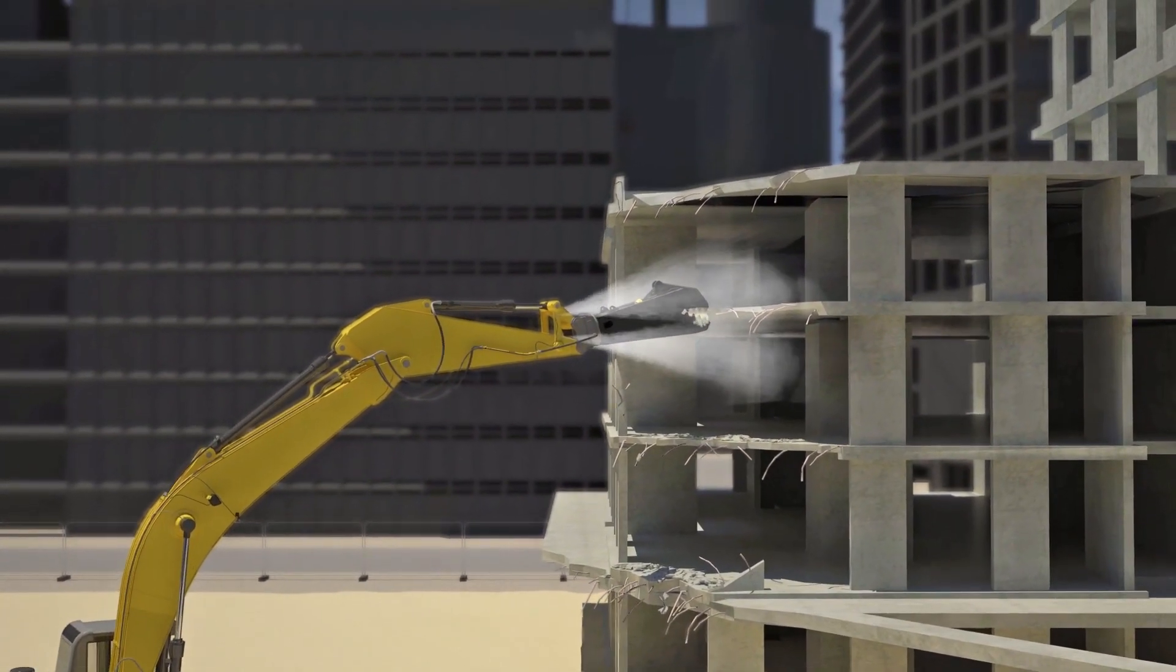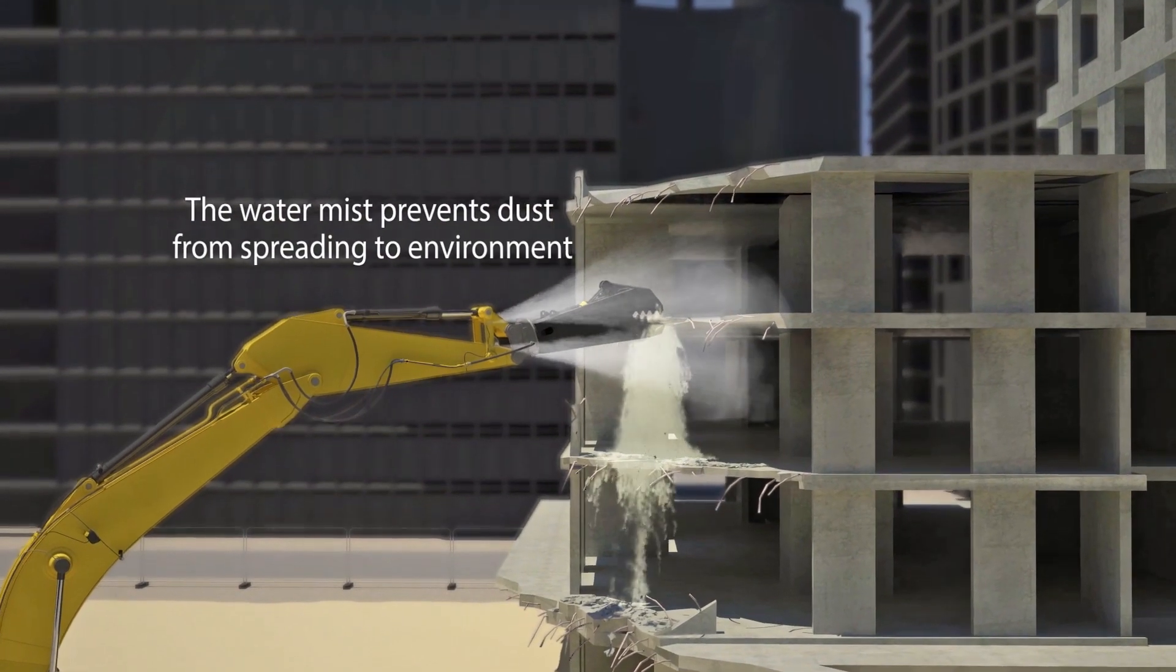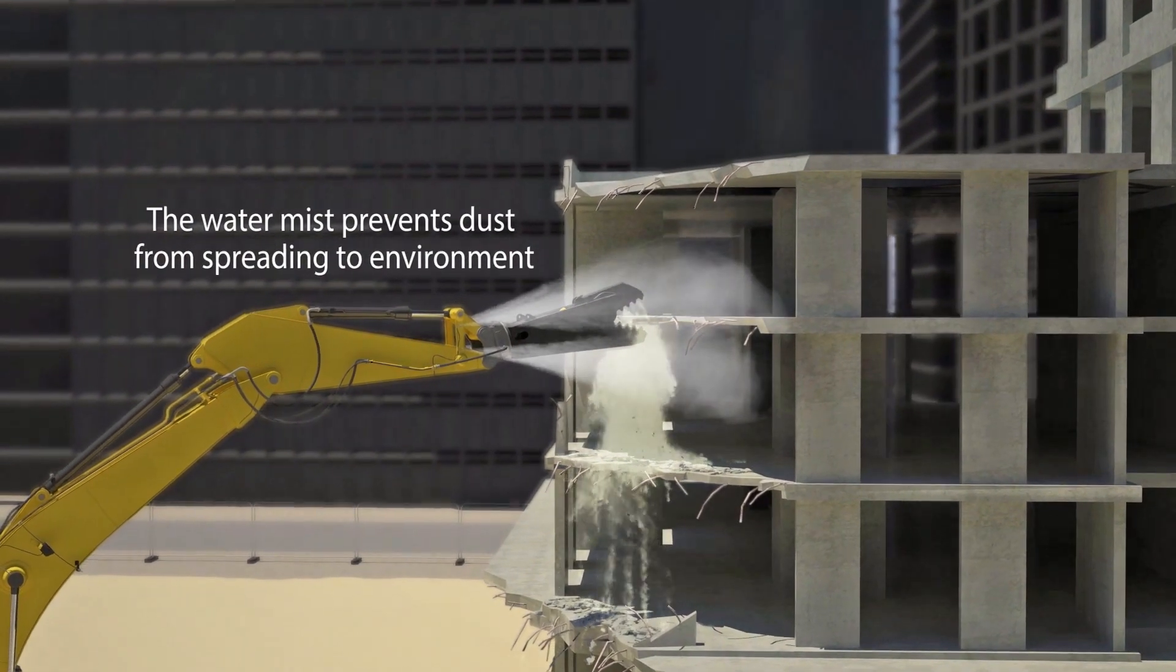The HBWDust system produces atomized high-pressure water mist to suppress the dust and prevent it from spreading into the environment.